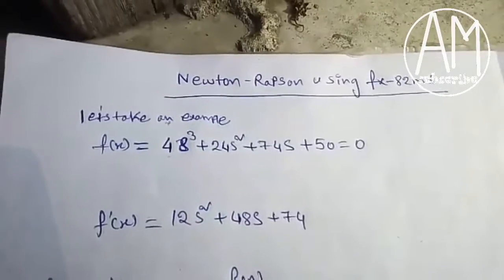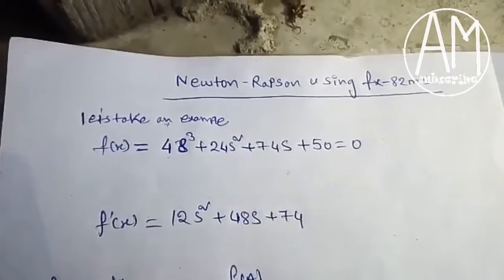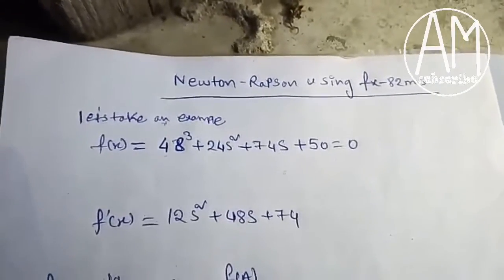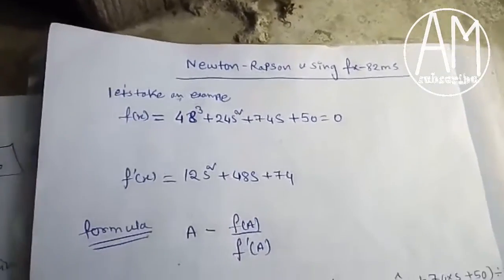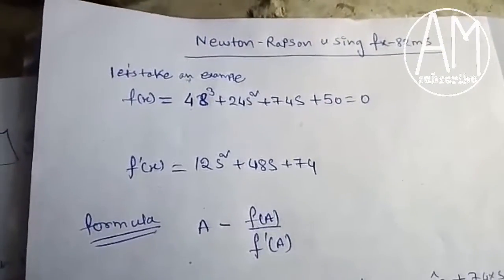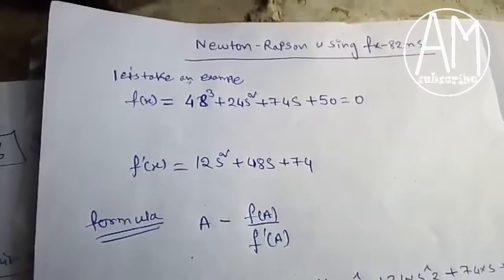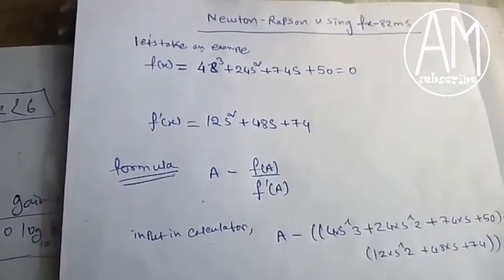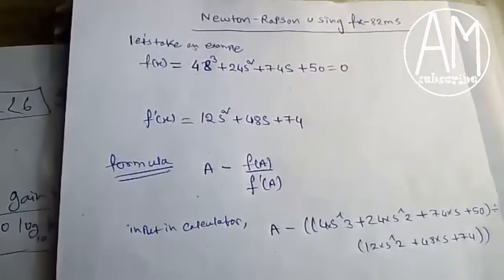Let's take an example: 4x³ + 24x² + 74x + 50 = 0. The derivative f'(x) will be 12x² + 48x + 74. The formula for Newton-Raphson is A minus f(A) by f'(A).